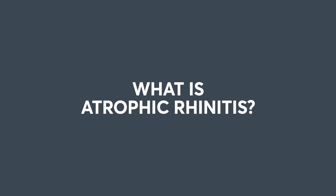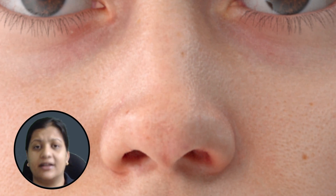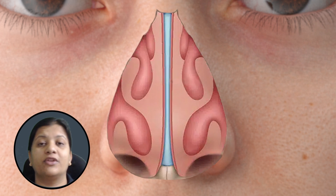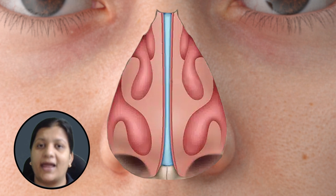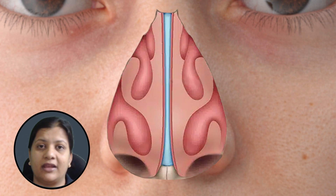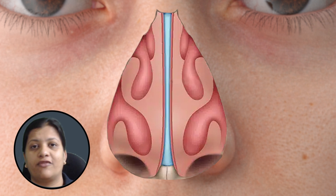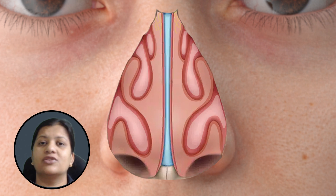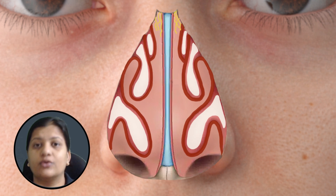The topic for today is atrophic rhinitis. As the name suggests, atrophic rhinitis is a condition where there is atrophy of the mucosa of the nose, paranasal sinuses, the epithelium — whether it is olfactory or any sort of tissue inside the nose and paranasal sinuses.